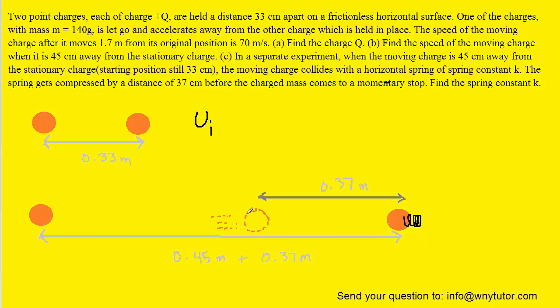We go to the final scenario. We were told that the moving charge when it was 45 centimeters away from the stationary charge encounters a spring and compresses that spring by 37 centimeters. If we look at that picture carefully, we can see that the total distance between the charges is 45 centimeters plus 37 centimeters, which gives us 82 centimeters.